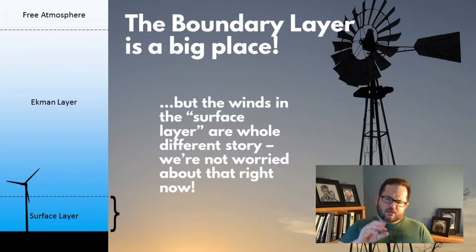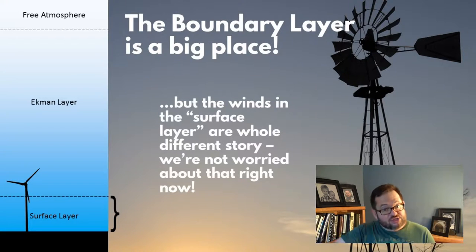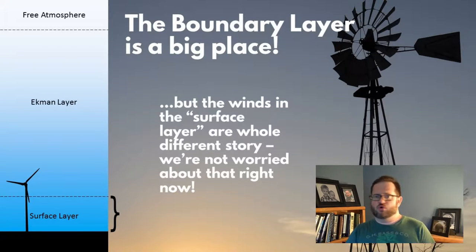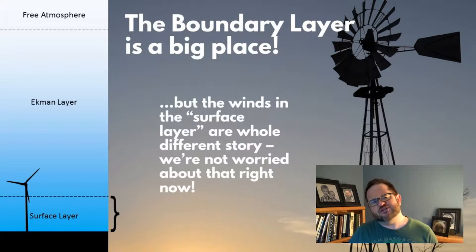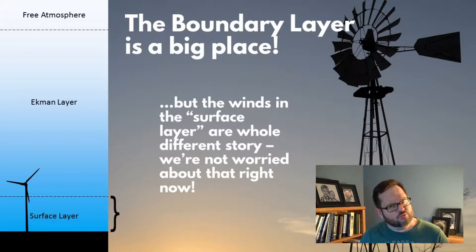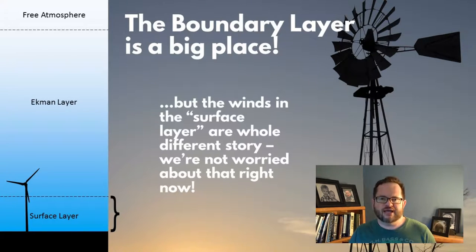The boundary layer has two parts: the Ekman layer and the surface layer. The surface layer is a whole different story. The winds in the surface layer follow a log wind profile and all this kind of stuff — we'll get to that in a future module.